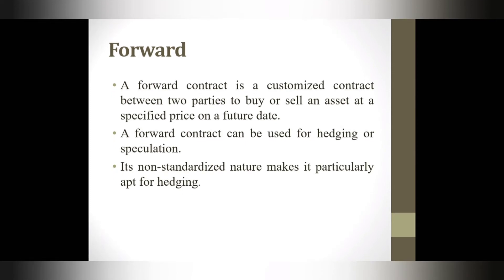The next type is the forward contract, which is similar to a futures contract but with some differences. A forward contract is a non-standardised contract between two parties to buy or sell an asset at a specified future time and at a price agreed upon today. Being non-standardised means they are traded over the counter market. Forward contracts are generally used to hedge risk in commodities, interest rates, exchange rates, or equities.